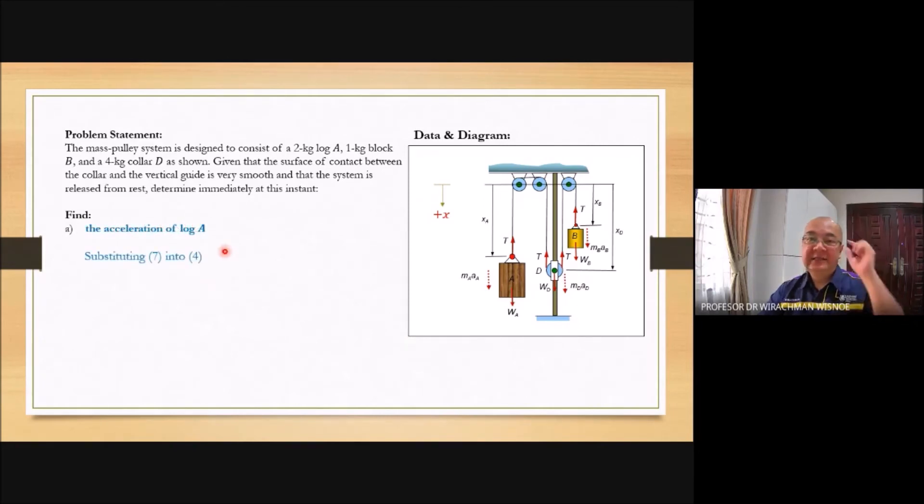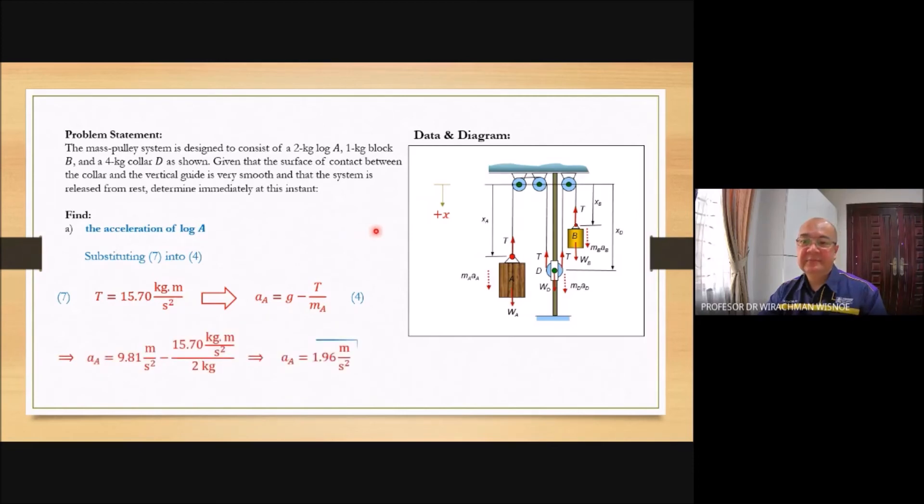Now let's see. To question A. We want to calculate the acceleration of log A. Substitute equation number seven into four. And replace T here with this. So the acceleration of log A is 1.96 meter per second square.